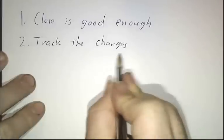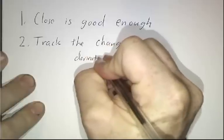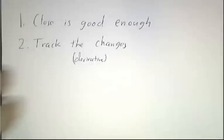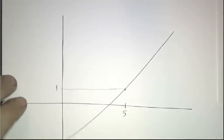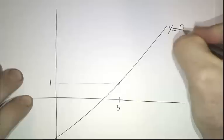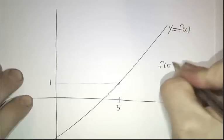The second big idea of calculus was tracking the changes, using a derivative to figure out what a function is doing. So for example, let's suppose we have a function here. This is the graph y equals f of x.